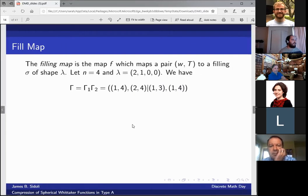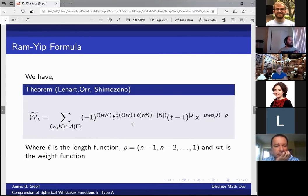Moving on, so first what we want to do with this Ram-Yip formula is we want to use techniques defined for the compression of Hall-Littlewood polynomials. And use a similar proof technique to push this formula forward to derive a new formula for the spherical Whitaker function that's over HHL type fillings.